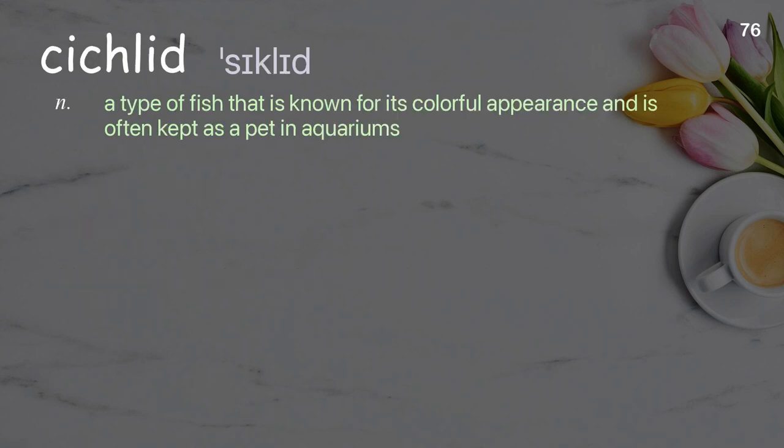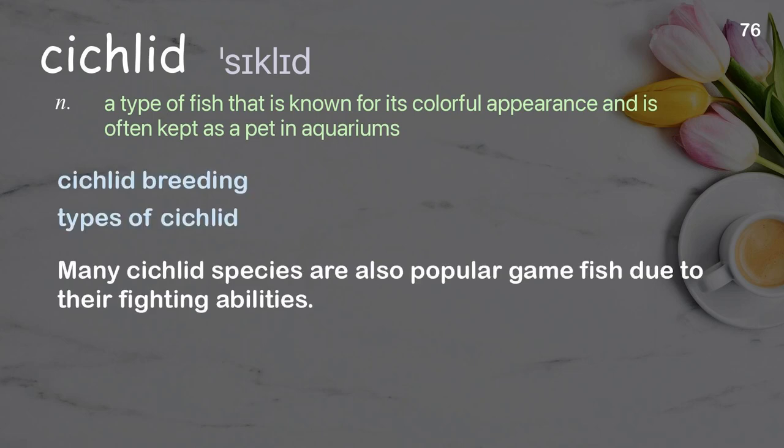Cichlid. A type of fish that is known for its colorful appearance and is often kept as a pet in aquariums. Examples: cichlid breeding, types of cichlid. Sentence: Many cichlid species are also popular game fish due to their fighting abilities.